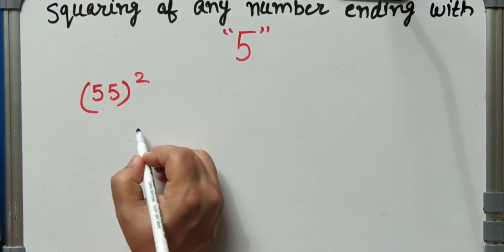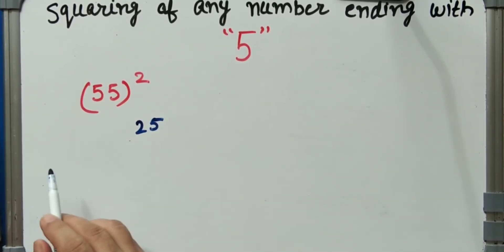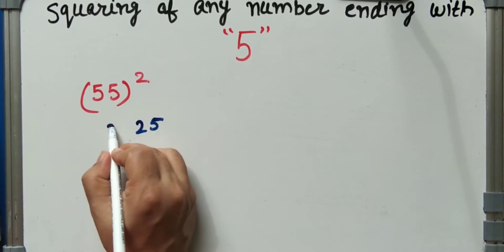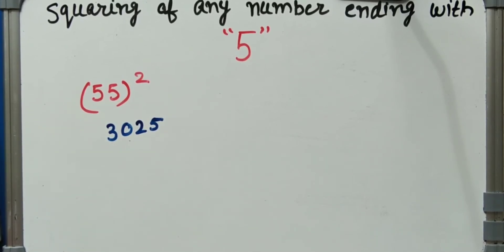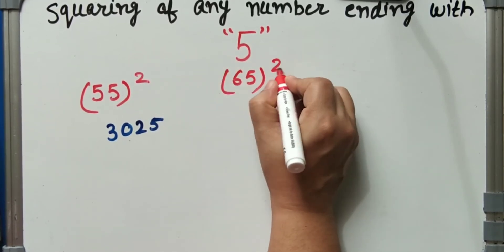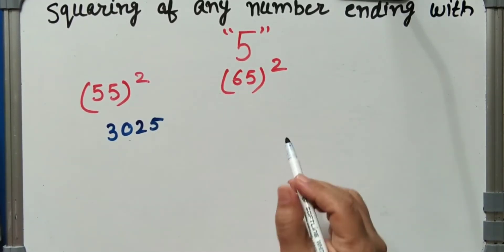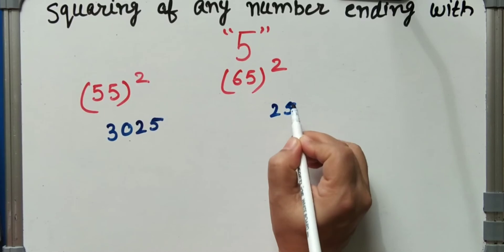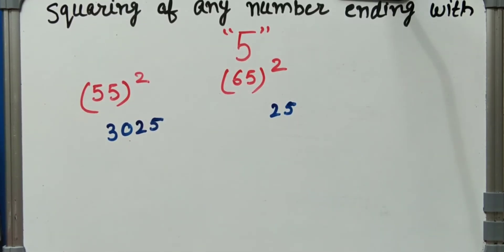55 square: 5 square is 25, 5 into 6, 30, 25. Next, 65 square: 5 square is 25, 6 into 7, 42, 25.